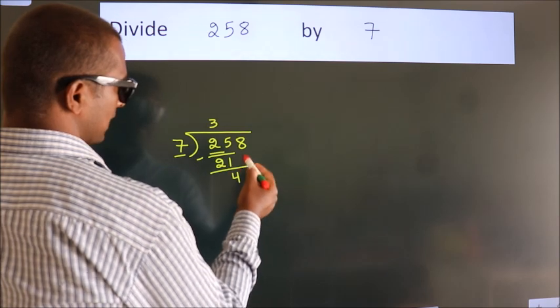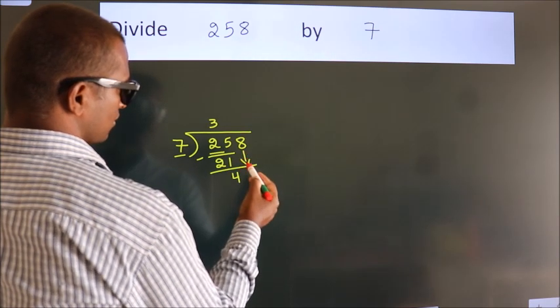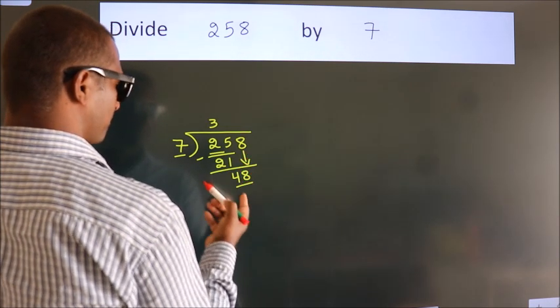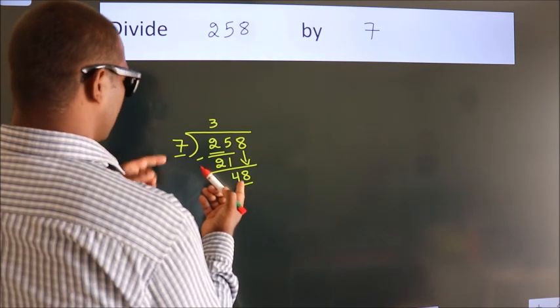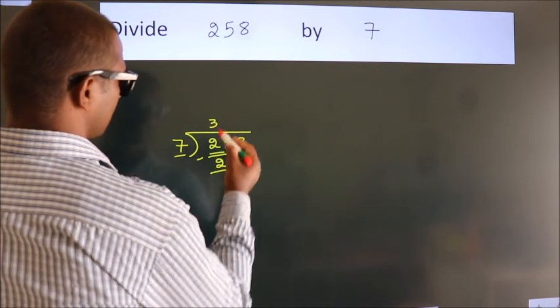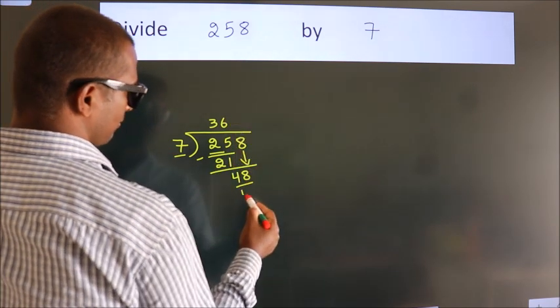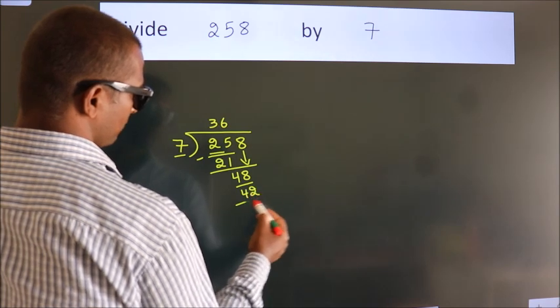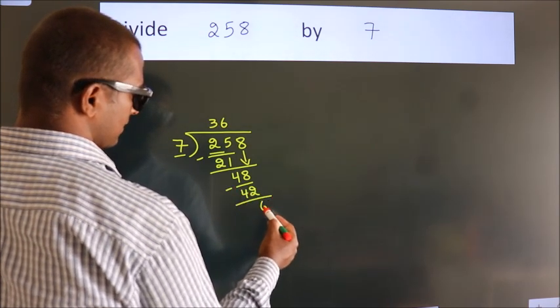After this, bring down the beside number. So 8 down. So 48. A number close to 48 in the 7 table is 7 times 6, 42. Now we subtract. We get 6.